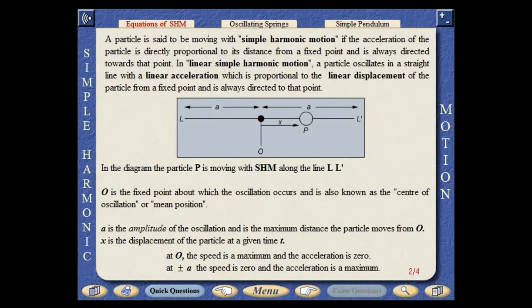A particle is said to be moving with simple harmonic motion if the acceleration of the particle is directly proportional to the distance from a fixed point and is always directed towards that point. In linear simple harmonic motion, a particle oscillates in a straight line with a linear acceleration which is proportional to the linear displacement of the particle from a fixed point and is always directed to that point.